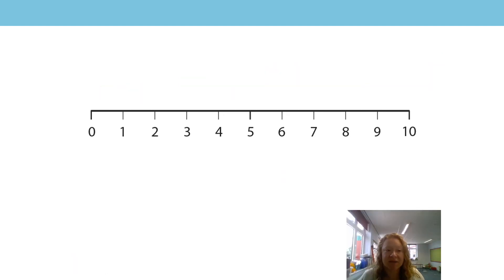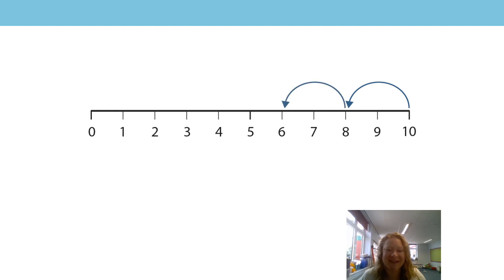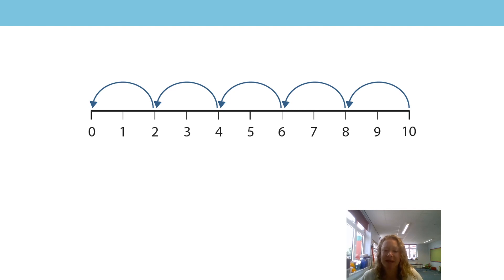So here's our number line, and I want to think about what happens when we skip count backwards in twos. Ten goes to eight, six, four, two, zero. Let's look at that pattern — what's happening each time we jump? What operation are we doing? Well done everyone, we're subtracting two, aren't we? We're taking two away each time we jump back.